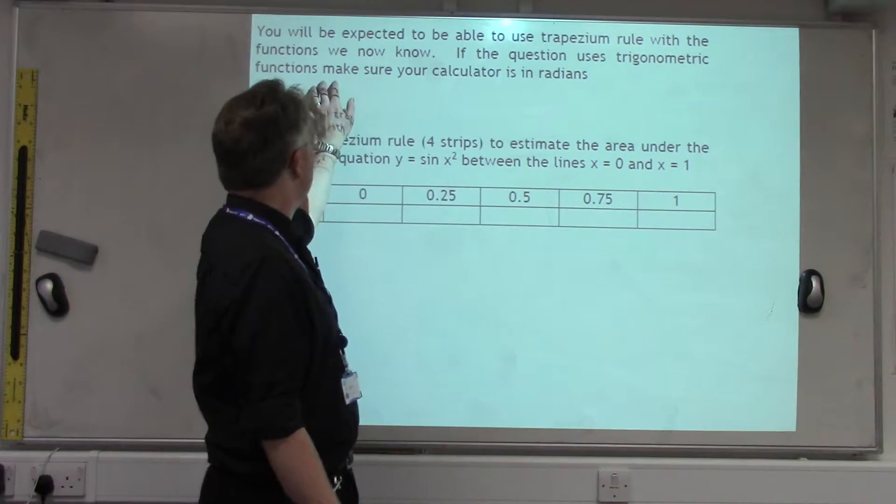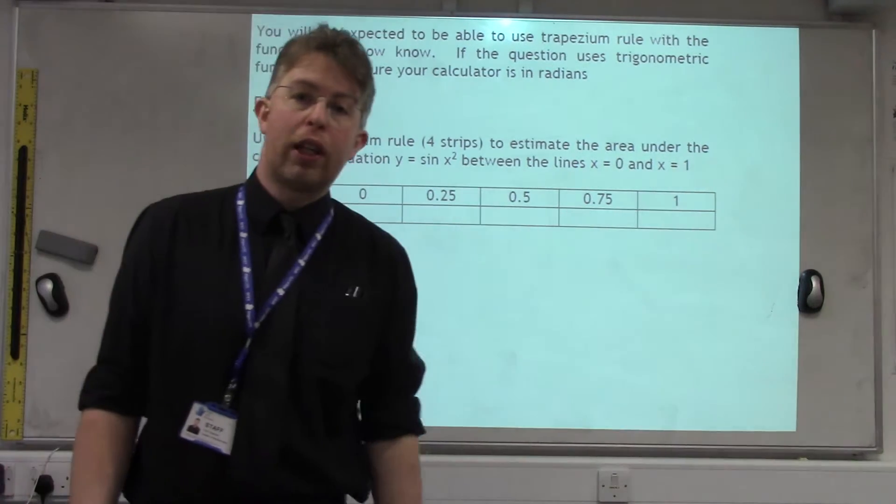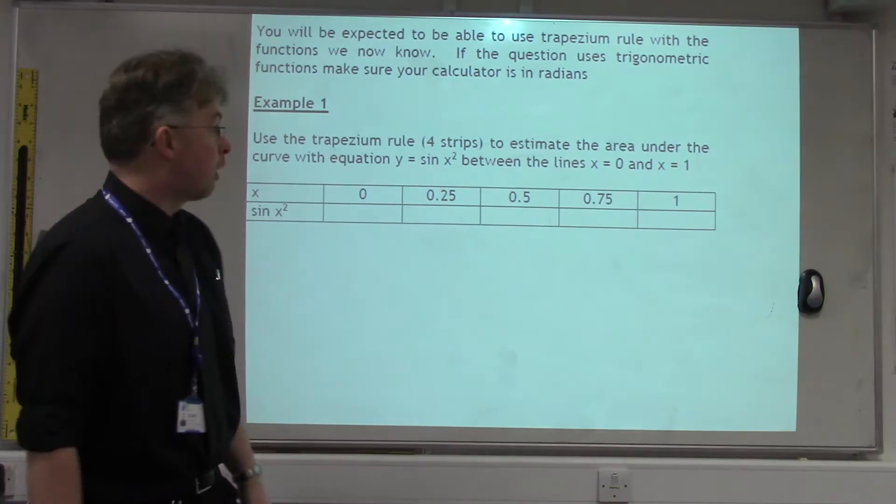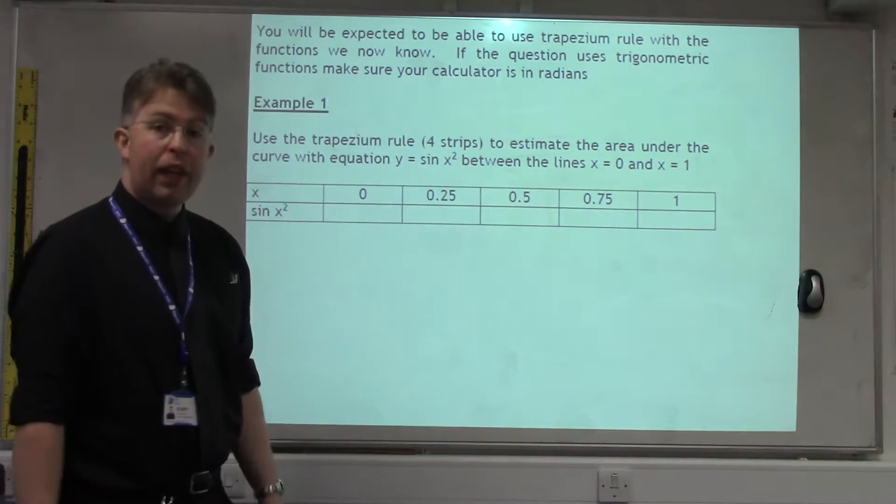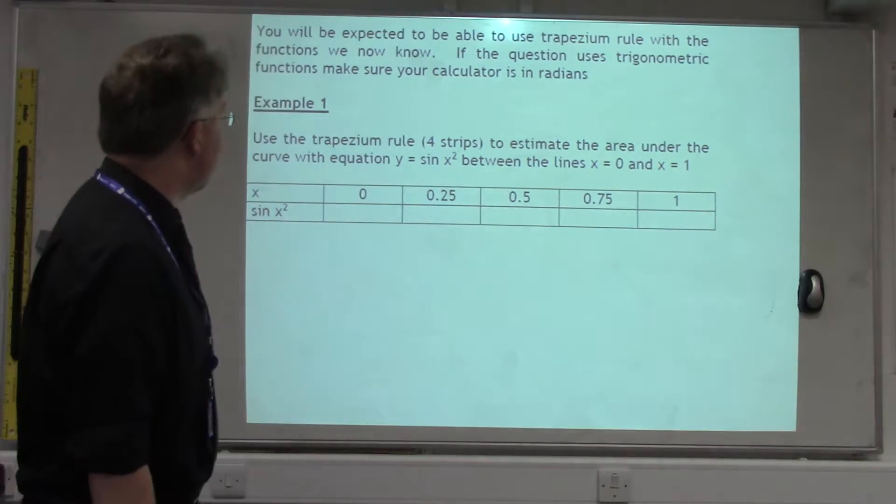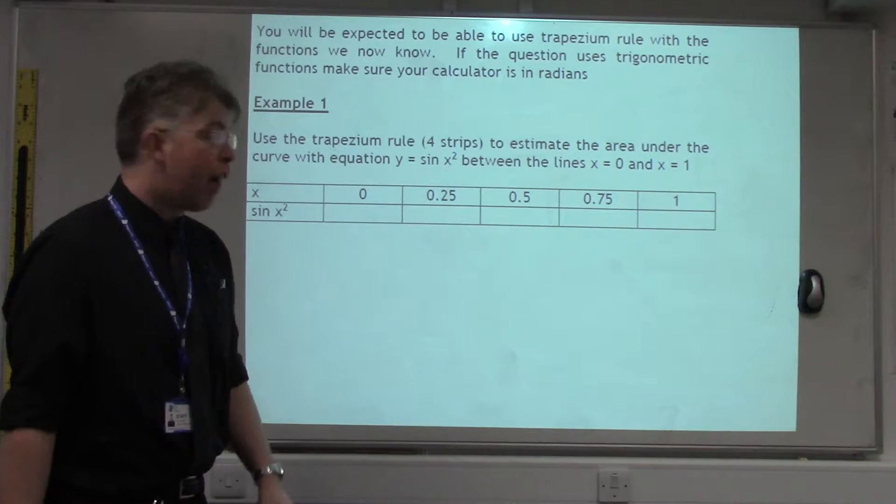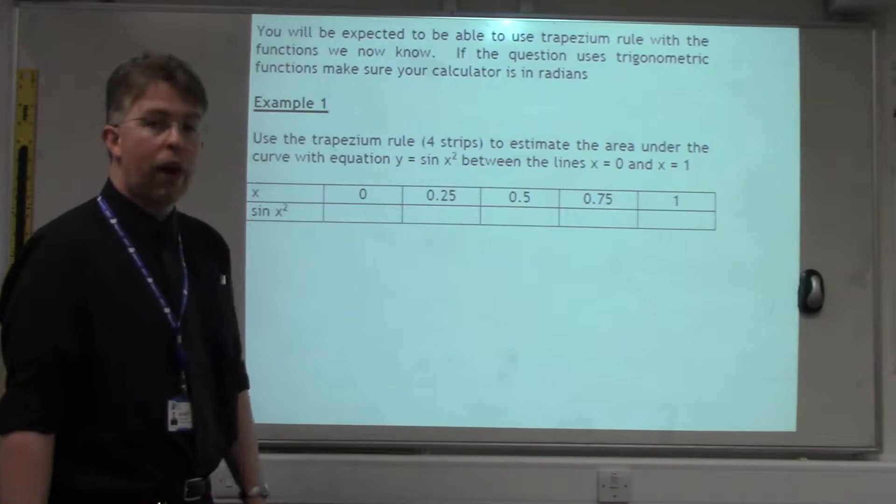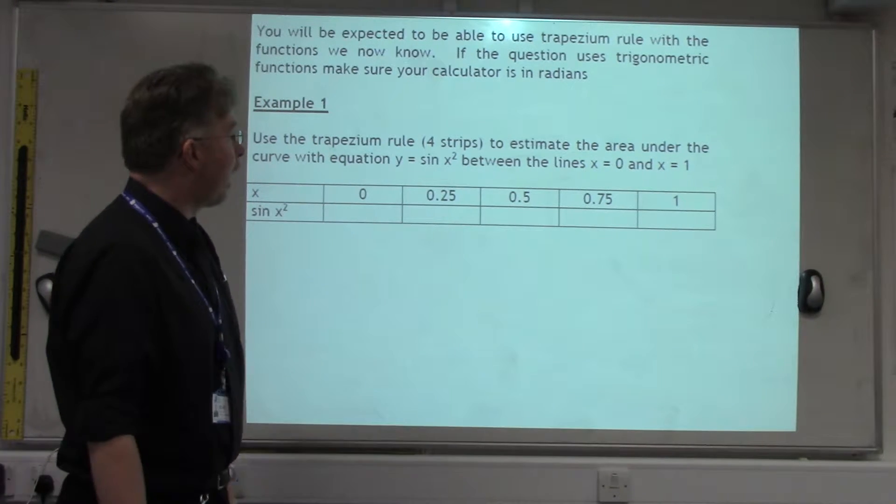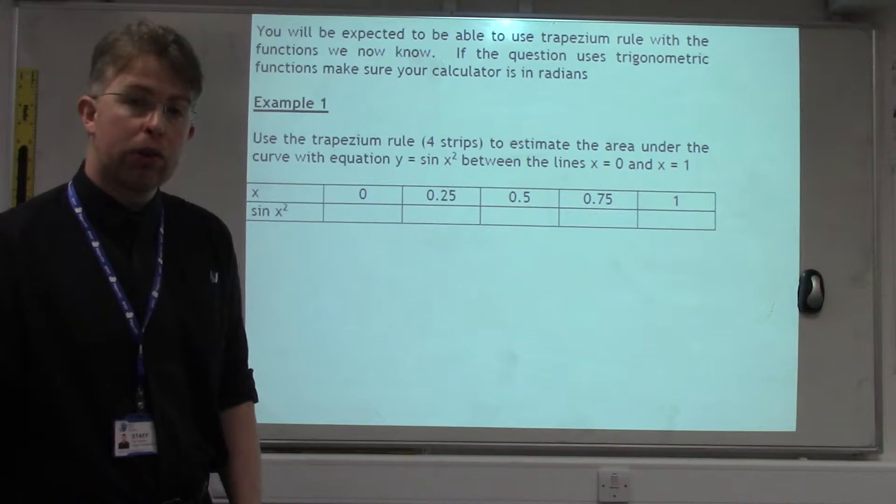If the question uses trigonometric functions, then you need to use radians, but it should be clear from the x values. So in this case, we have to use the Trapezium Rule with four strips to estimate the area under the curve of equation y equals sin x squared between the lines x equals 0 and x equals 1.